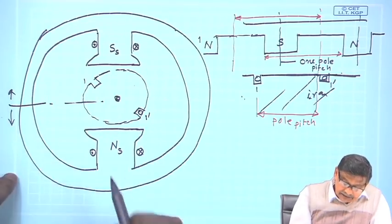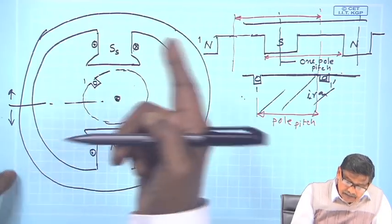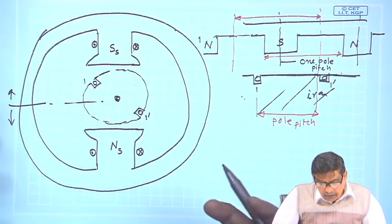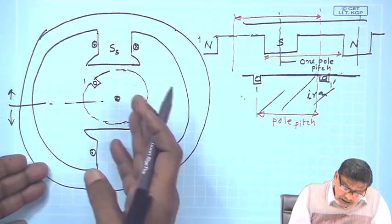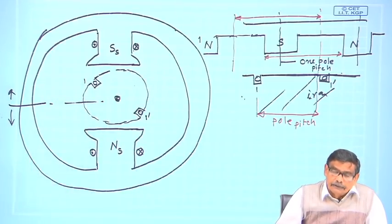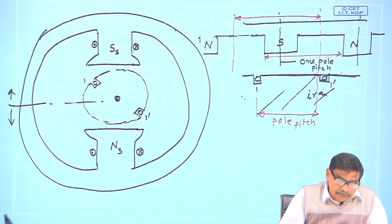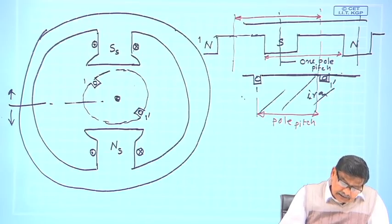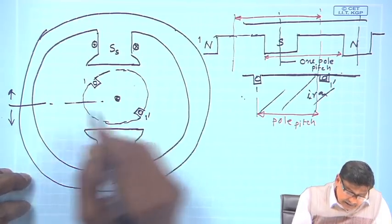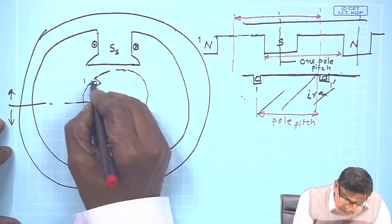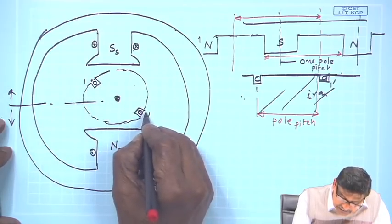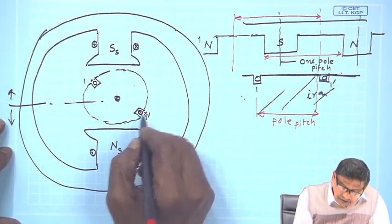In general, when operating as a motor or a generator, the rotor conductor will also carry current. Therefore, rotor conductors will also produce a magnetic field. For example, if I say that the rotor is carrying current — this is cross, this is dot — this conductor is carrying cross and this is dot.